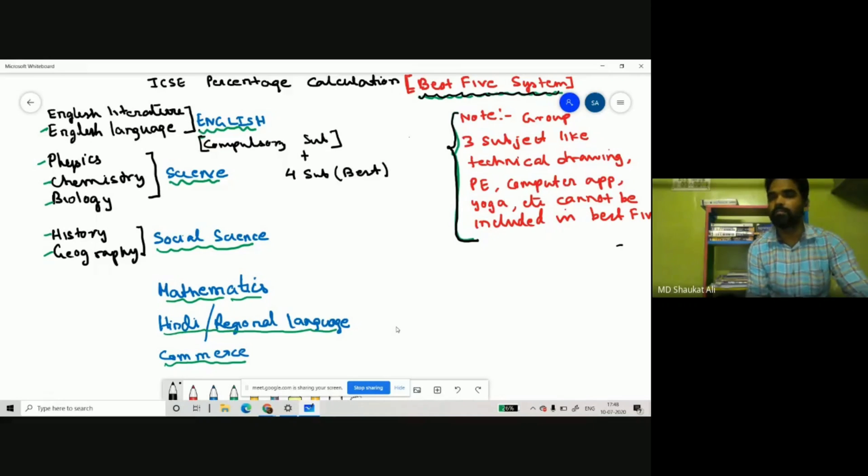Let us take an example. Suppose Raheel, my friend, in English got 90, in Hindi got 80, in math he gets 95...